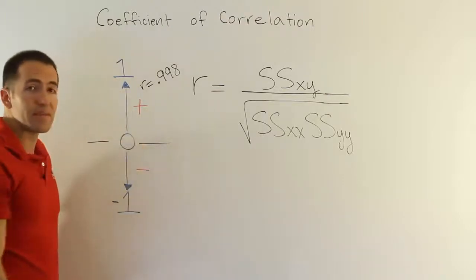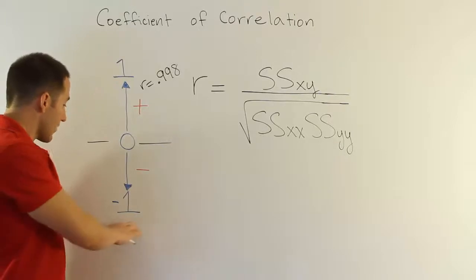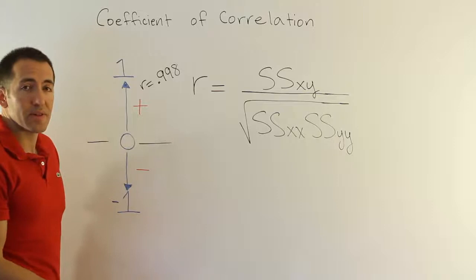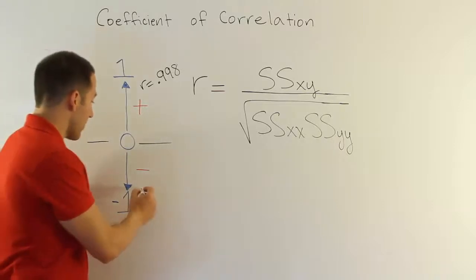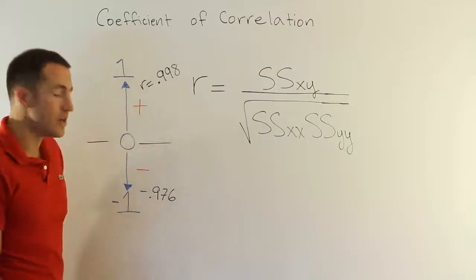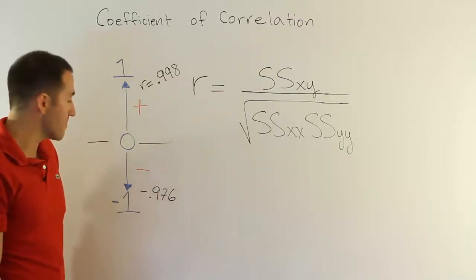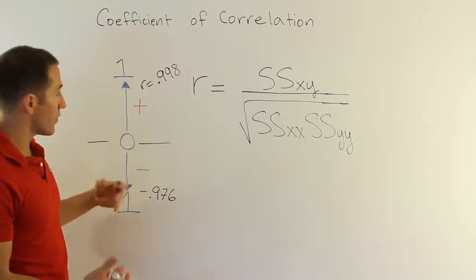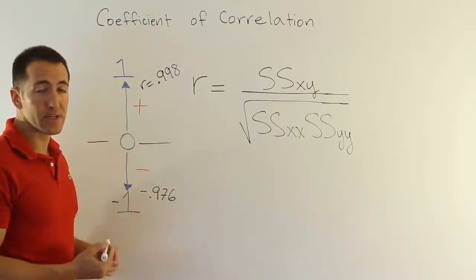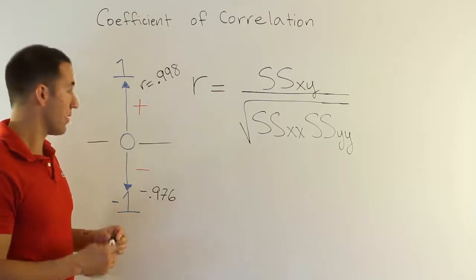Now on the negative end we have the same idea. Negative 1 is perfect negative correlation. That is not going to happen again typically in a stats class, but you might get something like minus 0.976 or something. That's a good strong negative correlation. And again, as we go closer to 0, of course the relationship gets weaker and weaker and weaker until we arrive at 0 where essentially there is no linear relationship between them.